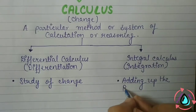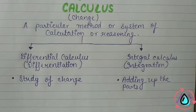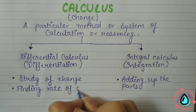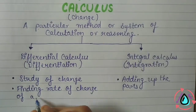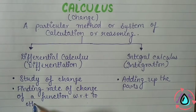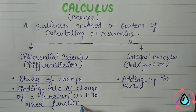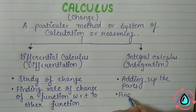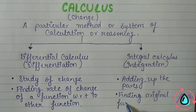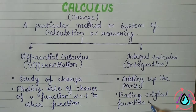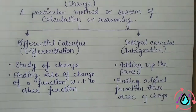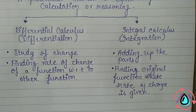In Differential Calculus, we find the rate of change of a function with respect to another function. In Integral Calculus, we find the original function whose rate of change is already given to us. So the rate of change is given, and we work backwards to find the original function.